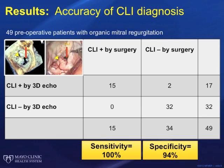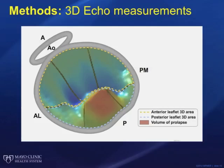Thus, for cleft-like indentation diagnosis by 3D transesophageal echocardiography, sensitivity was 100% and specificity was 94%. Mitral annular diameters, circumference, and area, as well as leaflet area and volume of prolapse, were obtained in systole with a dedicated quantification software.